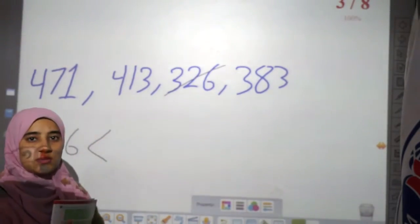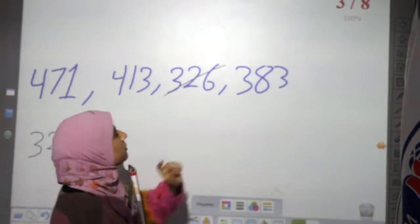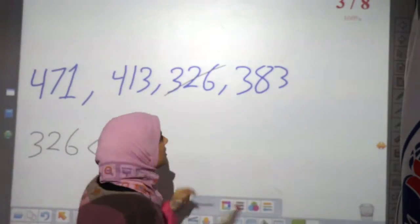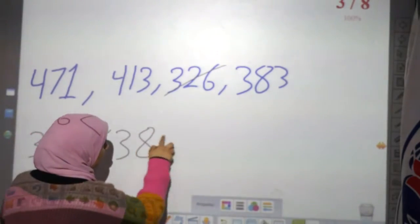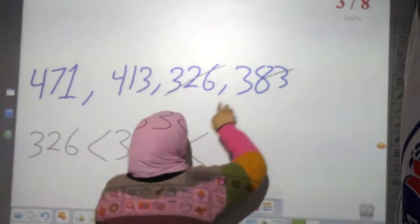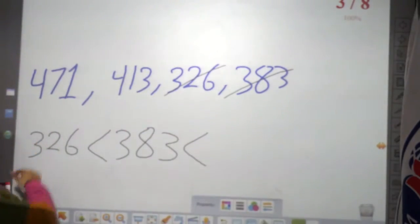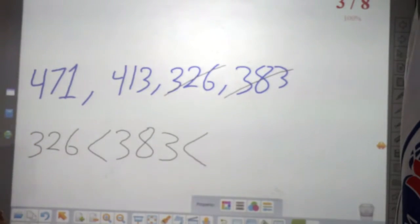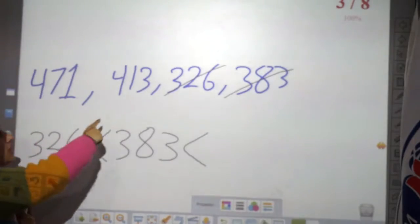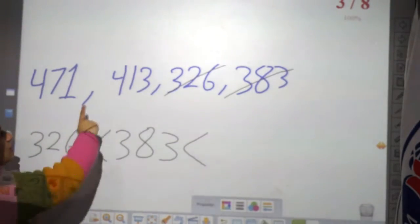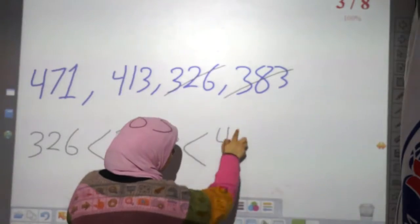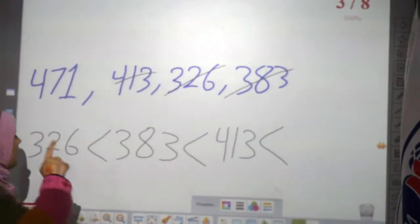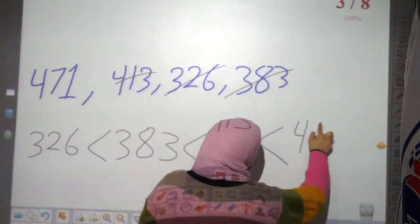Cross it — we used it. Now where is the small number from the three remaining? Here 400, 400, and here 300 — so it will be 383. Now where is the small: this or this? 400 and 400 — equal, so I go to the tens. Here 70 and here 10 — which is small? Excellent, 413! So the big one will be 471.